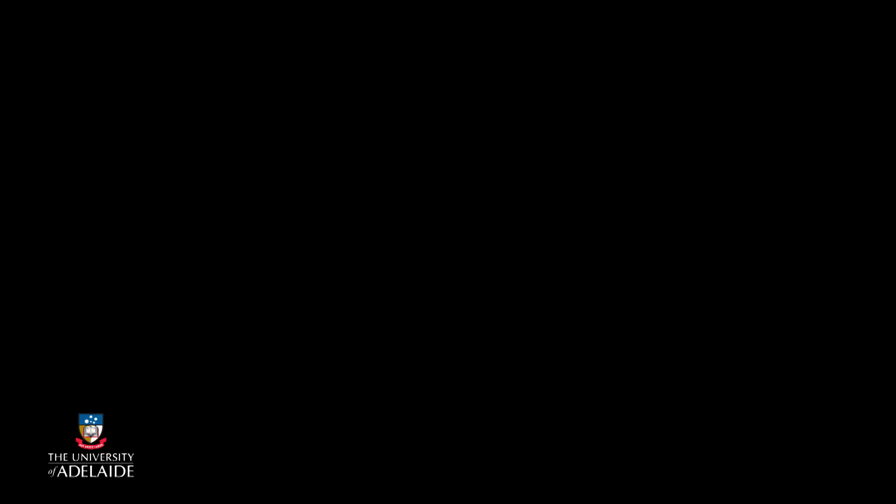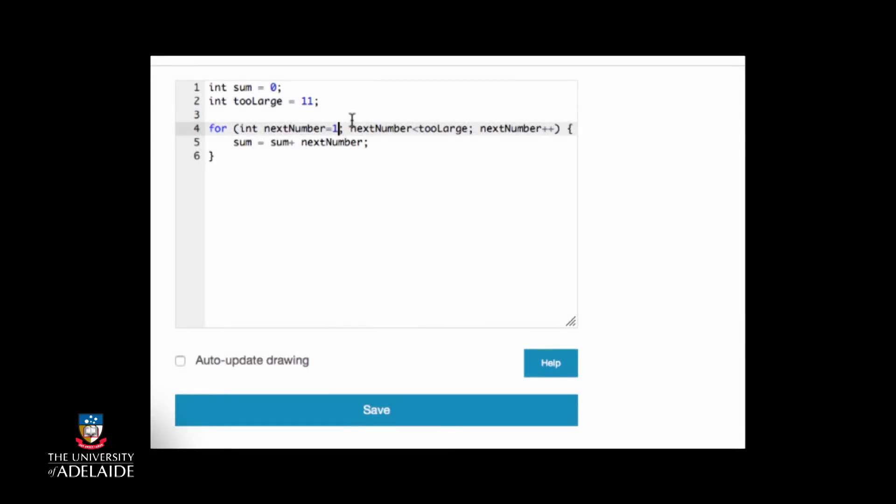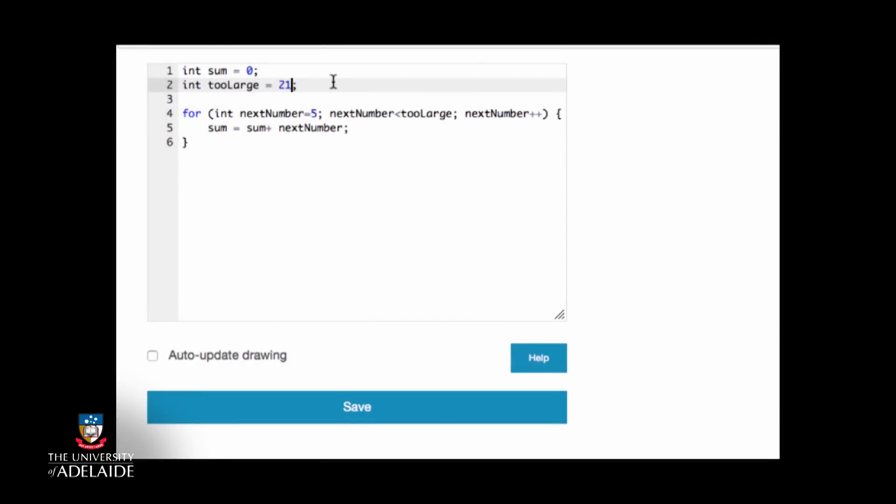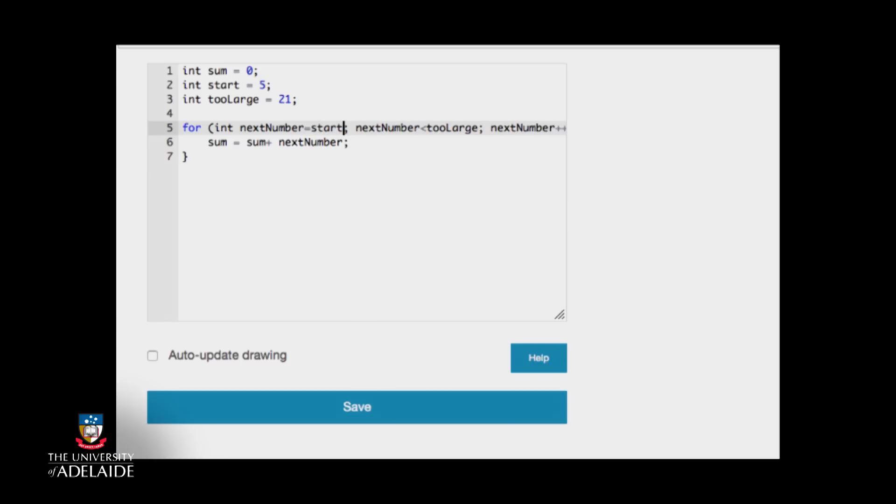And if we wanted to modify our sequence to be from 5 through to 20? We could do this this way. Or again, introducing a variable to represent the start of our number sequence. Let's take a look at what happens.